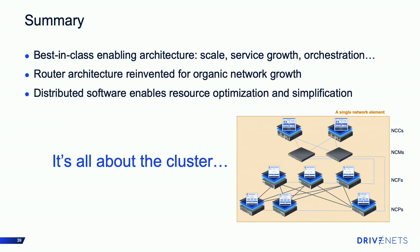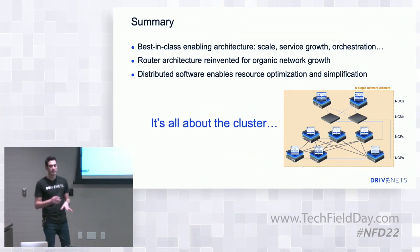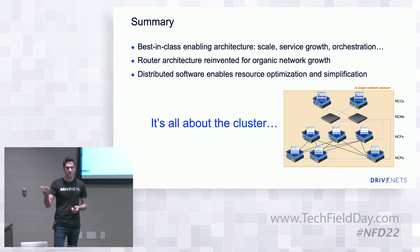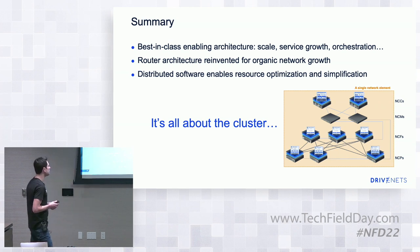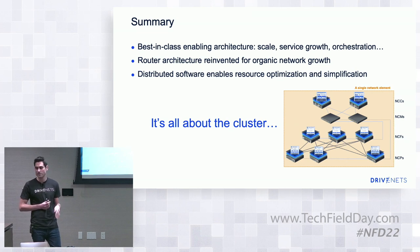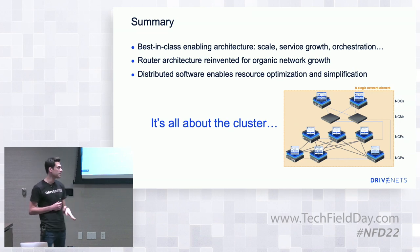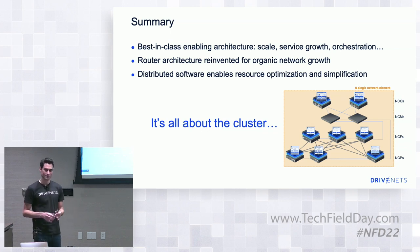To summarize: a best-in-class enabling architecture for service growth and orchestration. The router architecture here is completely reinvented. When we started, the solution wasn't found in how IOS XR or Juniper Junos is built — the solution came from web-scale and cloud architecture: distributed software enabling resource optimization and simplification. From the service provider perspective, this behaves like the router they know — just built completely differently. It's all about the cluster.